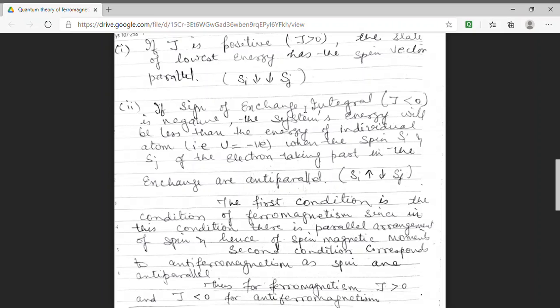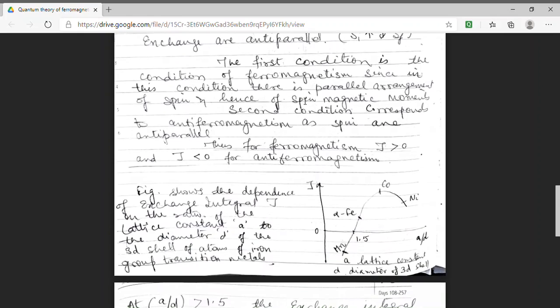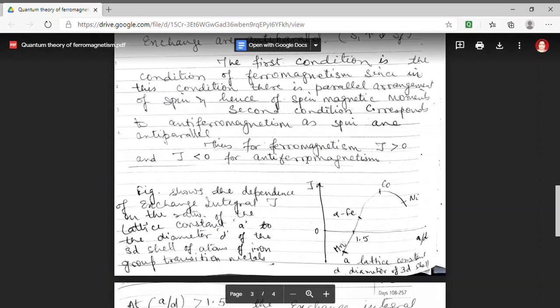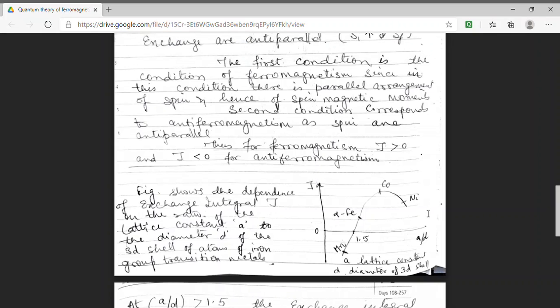So in order to show this we are plotting a graph. This is the graph between exchange integral and on x-axis we have plotted the ratio of lattice constant A to the diameter D of 3D shell. In this graph we have plotted iron group transition metals.